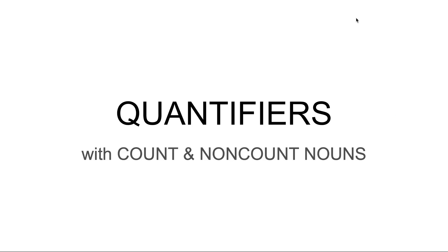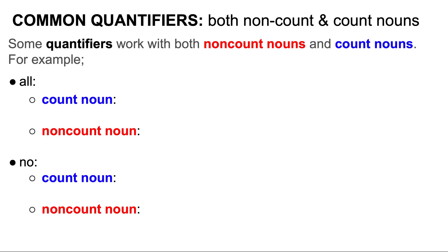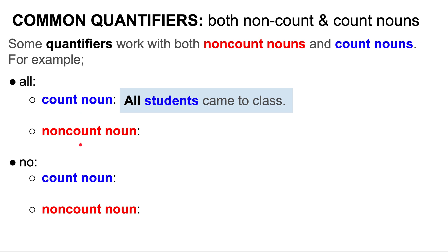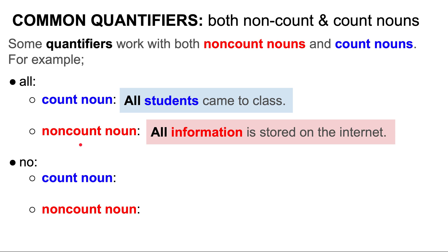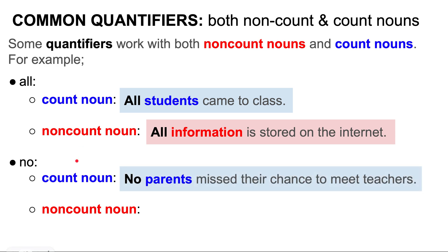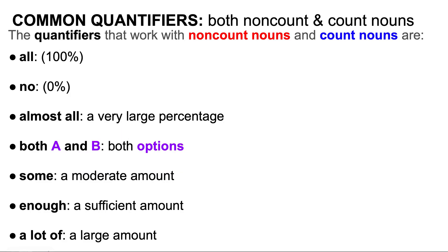Now let's look at quantifiers that work with both count and non-count nouns. For example: all — with a count noun, 'all students came to class'; with a non-count noun, 'all information is stored on the internet.' No — with a count noun, 'no parents missed their chance to meet teachers'; with a non-count noun, 'he was cheap, so he spent no money.' These quantifiers include: all (100%), no (0%), almost all (very large percentage), both A and B (both options), some (moderate amount), enough (sufficient amount), and a lot of (large amount).